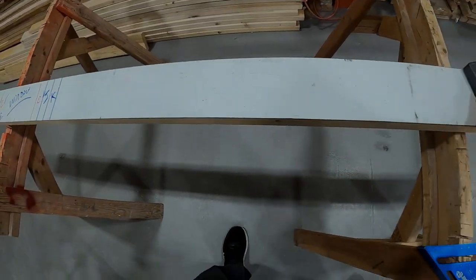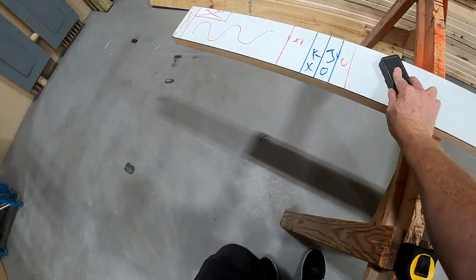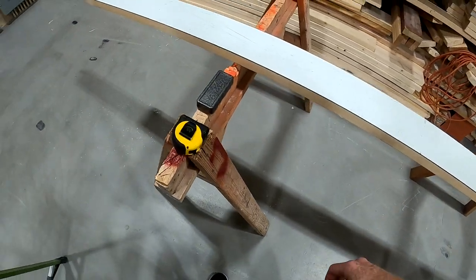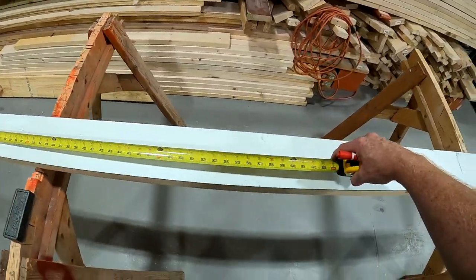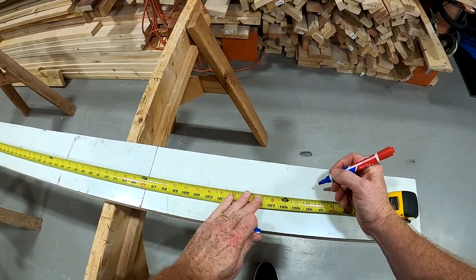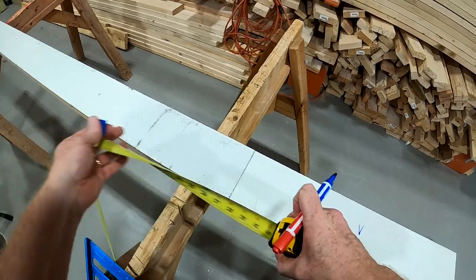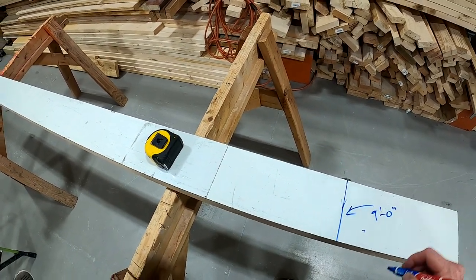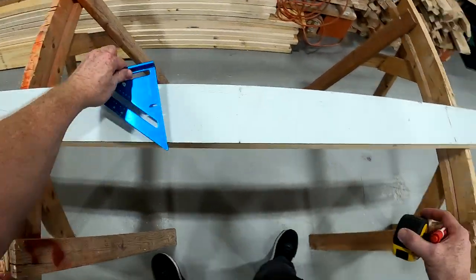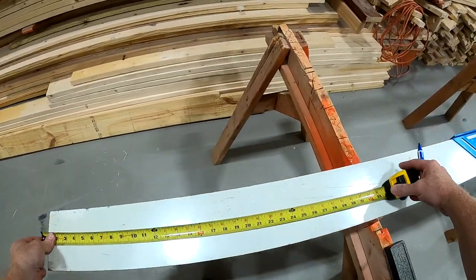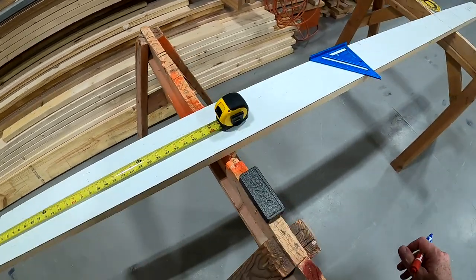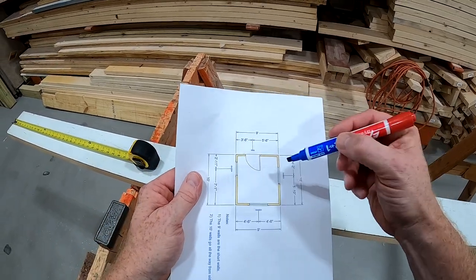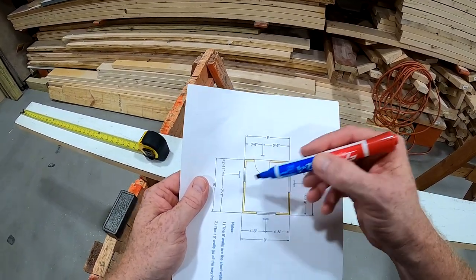Now I'm going to erase everything and quickly demonstrate a nine-foot sandwich wall — what I was talking about earlier. I come over here and pull the tape out to nine foot, make a mark — that's your nine-foot board. Now these 10-foot walls go all the way from one end to the other; the nine-foot wall is sandwiched in between them.